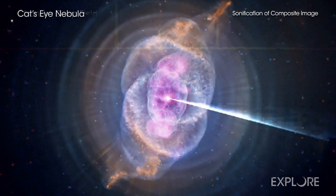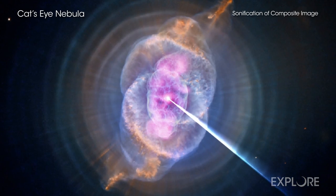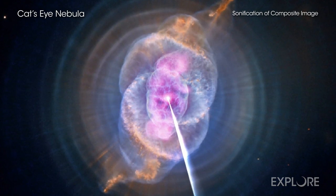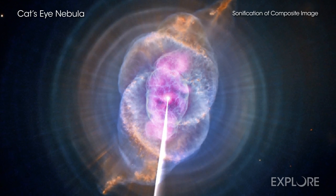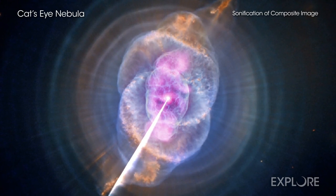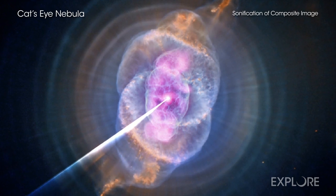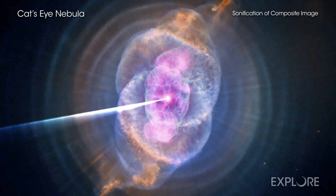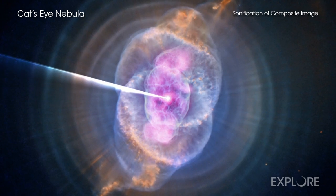The second new image is the planetary nebula known as the Cat's Eye. When a star like the sun begins to run out of helium to burn, it will blow off huge clouds of gas and dust. These outbursts can form spectacular structures such as the one seen in the Cat's Eye Nebula.